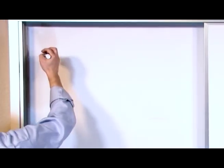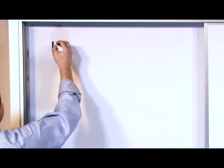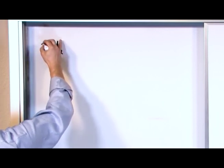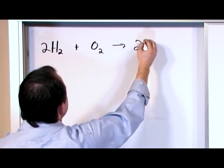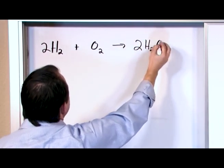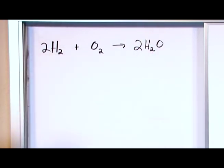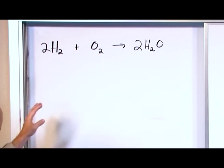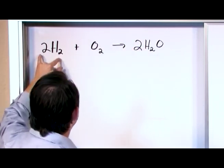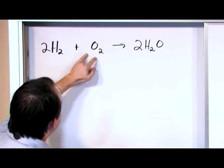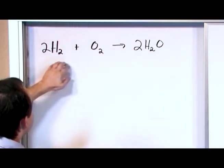Let me write one very simple chemical reaction on the board. Remember the reaction: 2H₂ plus O₂ yields 2H₂O. I picked this because it's very simple and it produces water. If you look, this is balanced — four hydrogens on each side, two oxygens on each side.